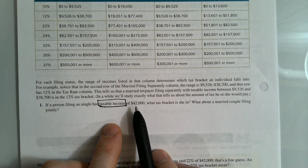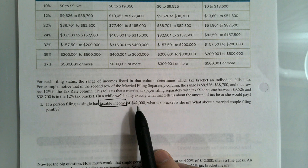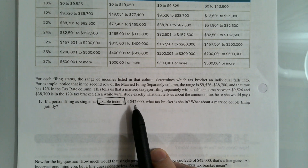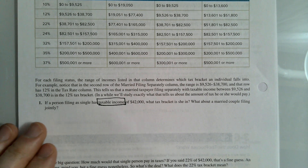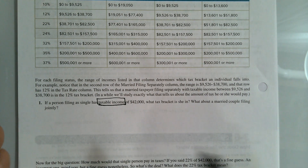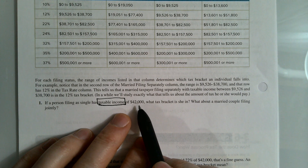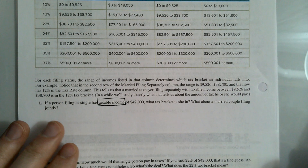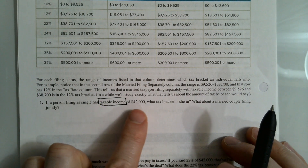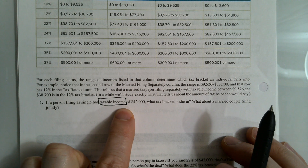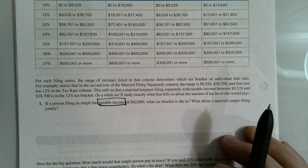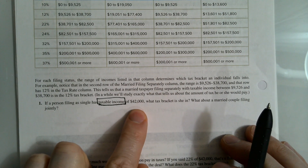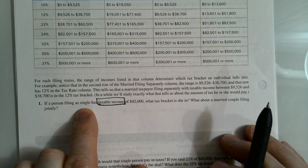The majority of taxpayers in America take the standard deduction. For married filing jointly it's around $24,000, and for filing single it's around $12,000 — you just reduce your income by that amount. For our purposes we're always going to use the standard deduction. In the project you're asked to find an income and use the standard deduction to calculate your taxable income, because itemized deductions get quite complicated.